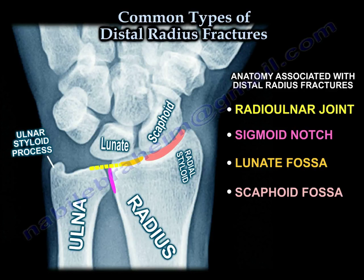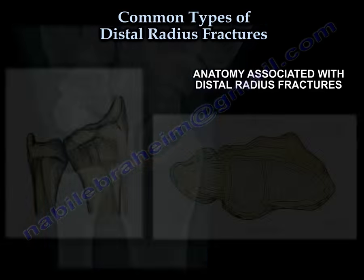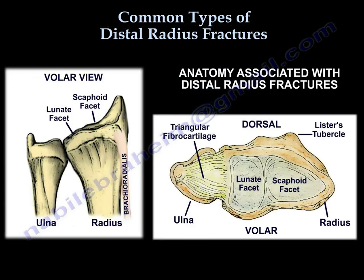We also need to look at the carpal bones, especially the lunate and the scaphoid. We also need to consider the triangular fibrocartilage and also the deforming forces of the brachioradialis.